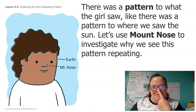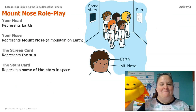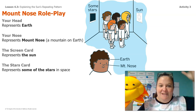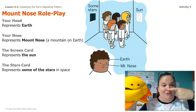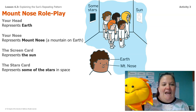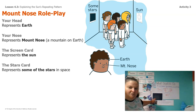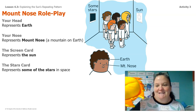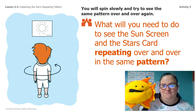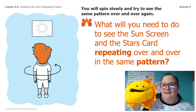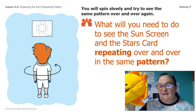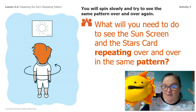Let's do Mount Nose to investigate why we see this pattern repeating. Mount Nose is my favorite. Remember that the Earth is your head, so your head represents the Earth. Your nose is a mountain on Earth — that's Mount Nose. The screen is going to be the sun with my sun puppet here. And the stars card behind me is going to represent some stars in space.